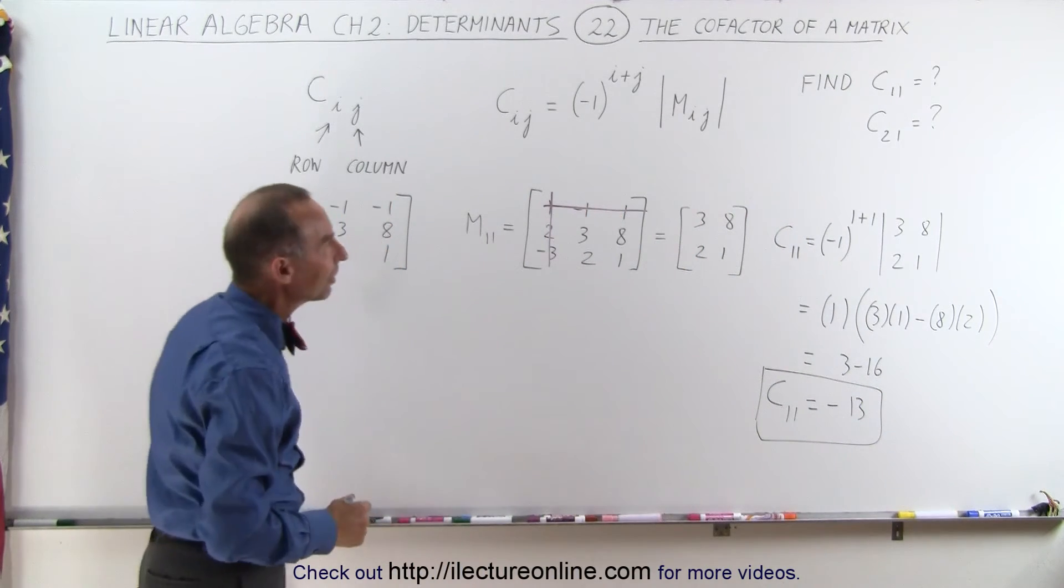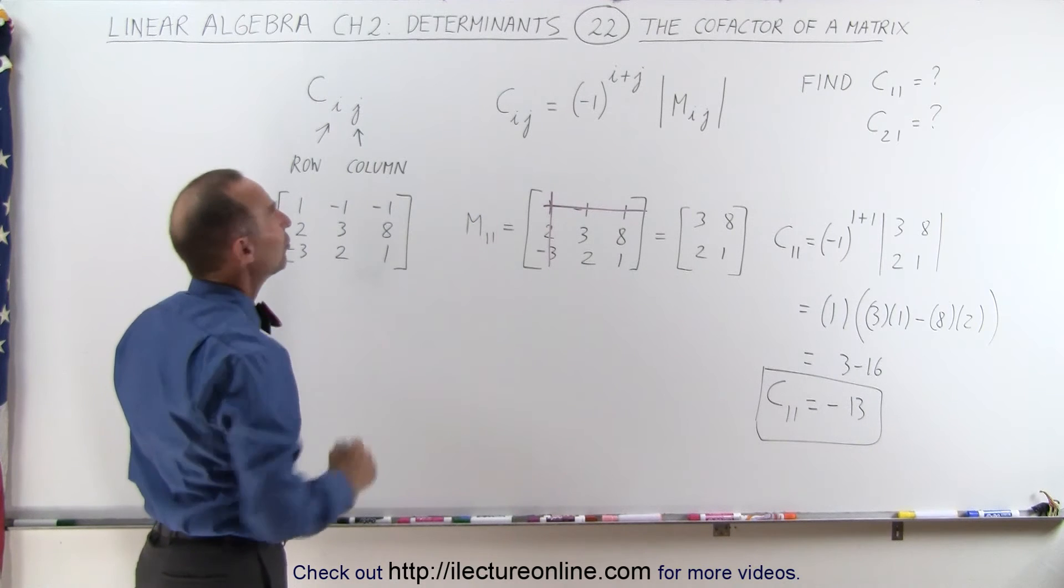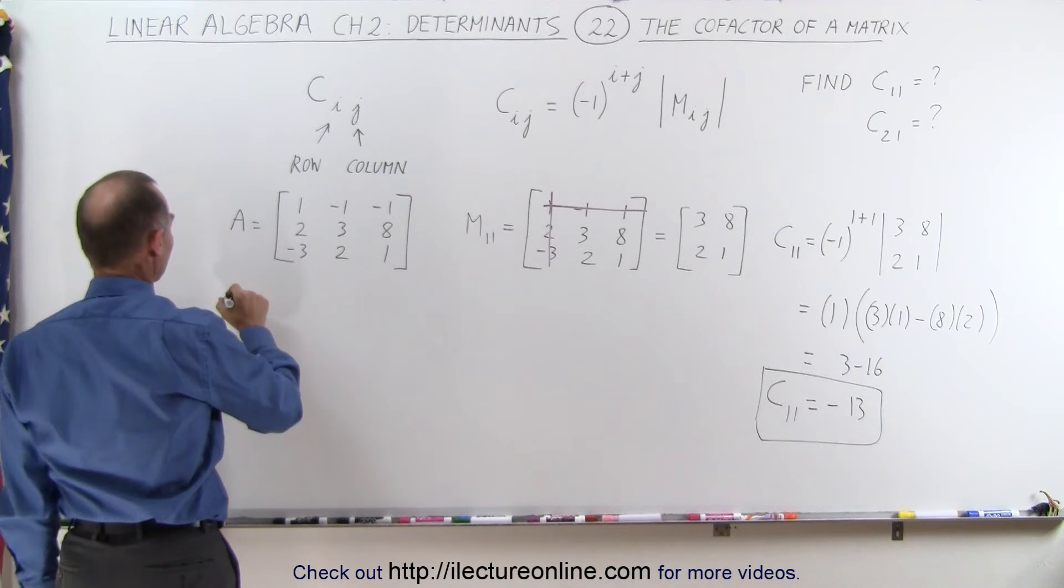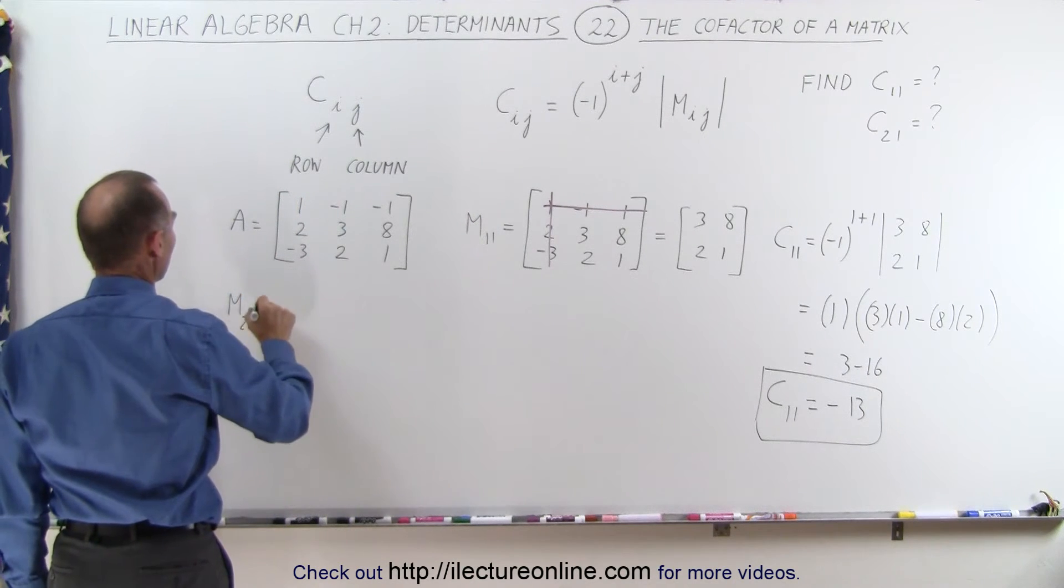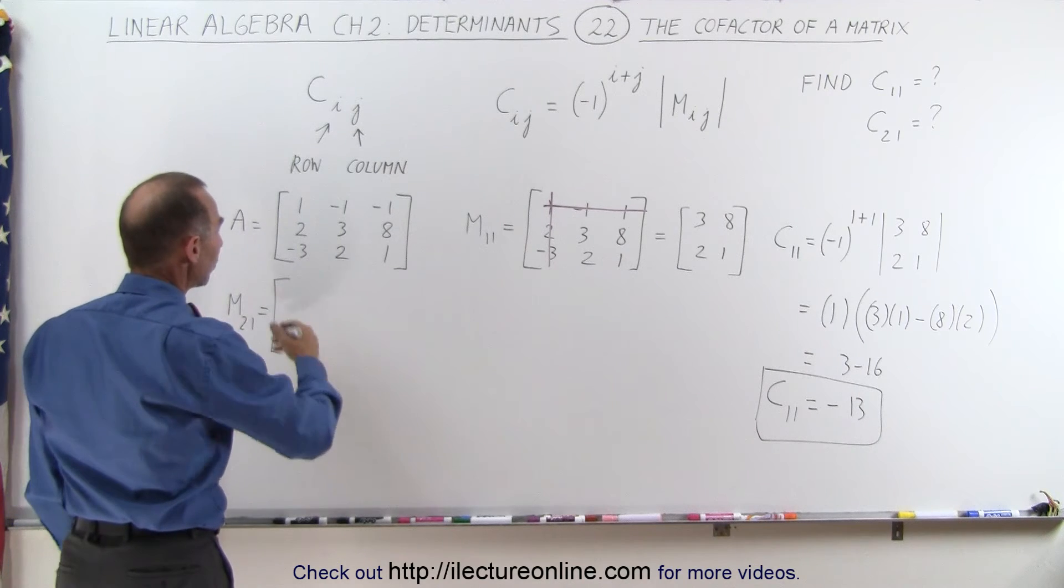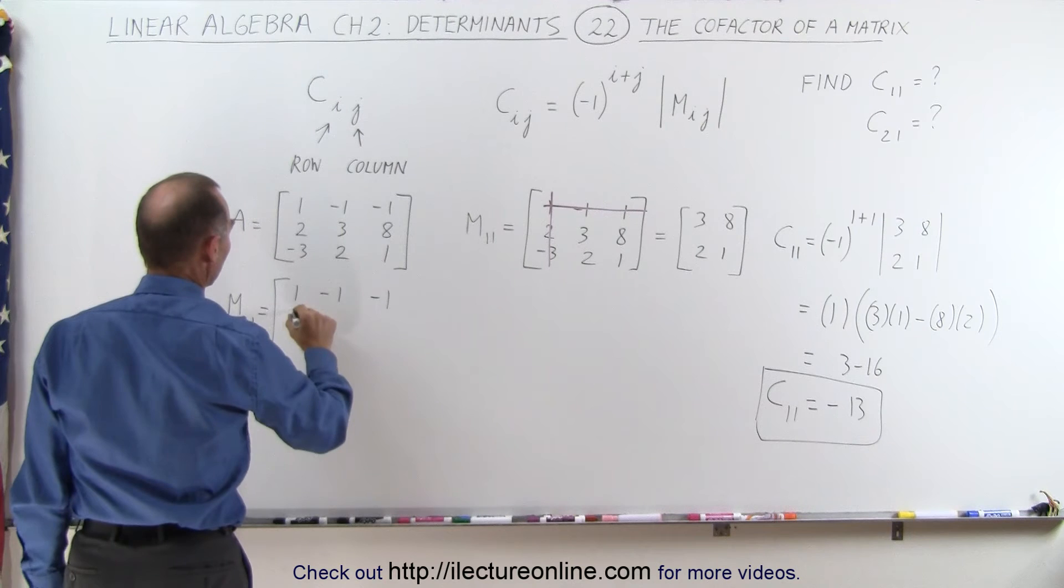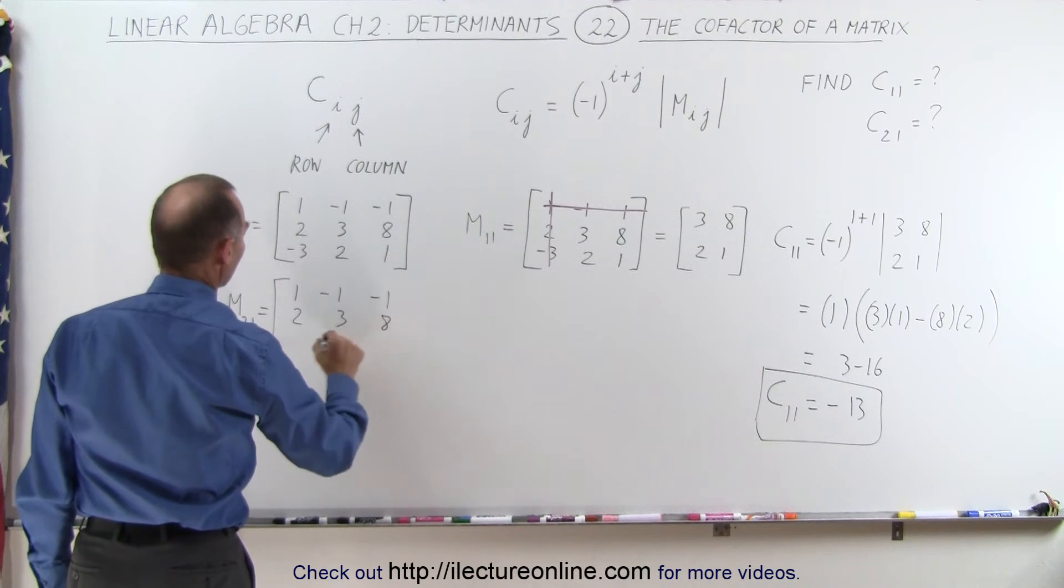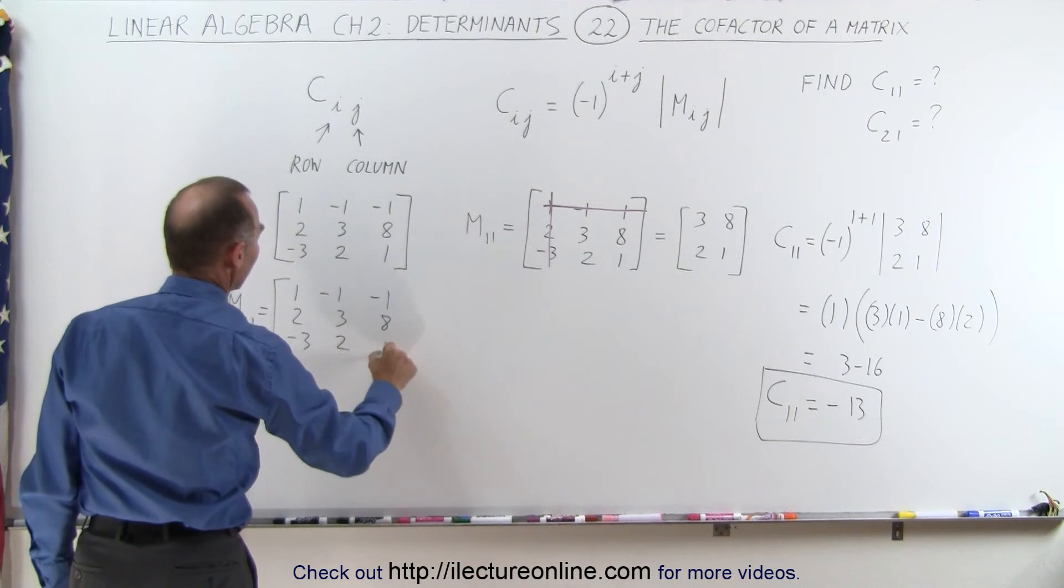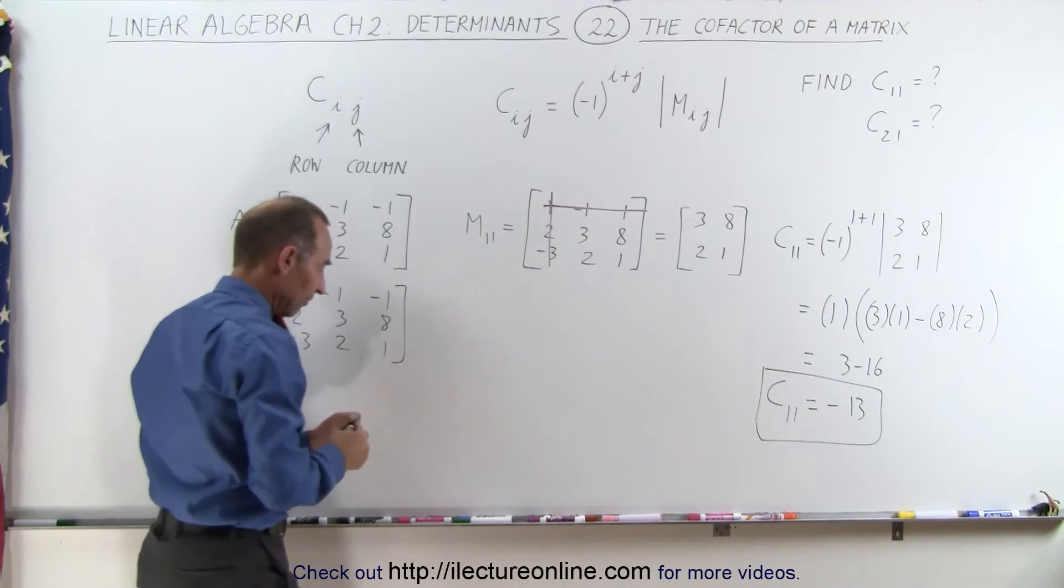Just so we can get the hang of it, let's do a second one, c21, and therefore we first have to find m21, which is equal to, again you're going to repeat the same matrix: 1, minus 1, minus 1, 2, 3, 8, minus 3, 2, and 1. I like to use a different color pen.